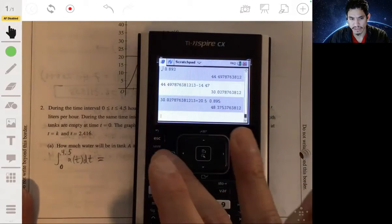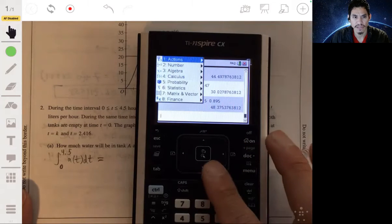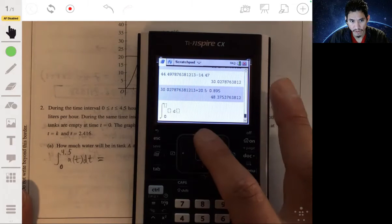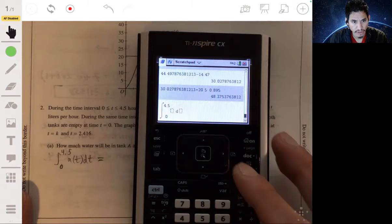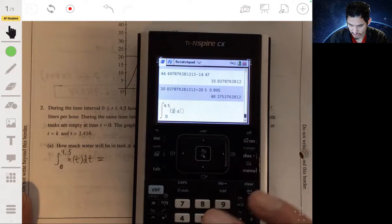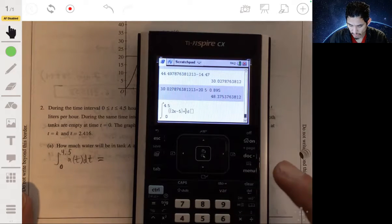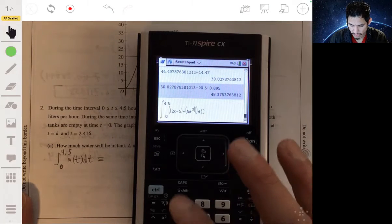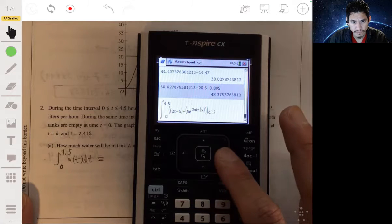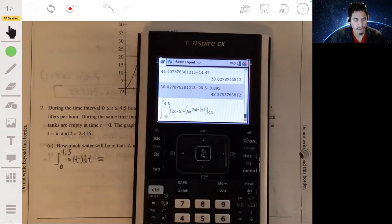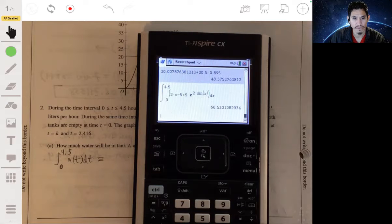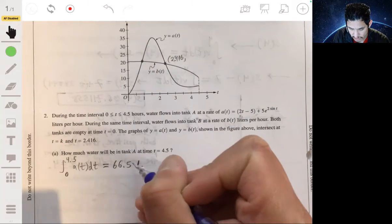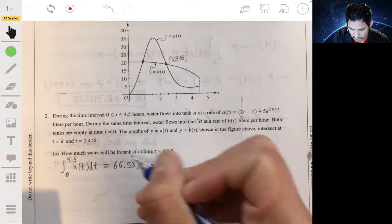So let's go to our calculator, put our calculation screen, pick the calculus function, numerical integral from 0 to 4.5. We're going to enter the function 2x minus 5 plus 5e to the 2 sine of x. Let's see what we got. So 66.53, that's going to be our answer. It's going to be about 66.53 liters.